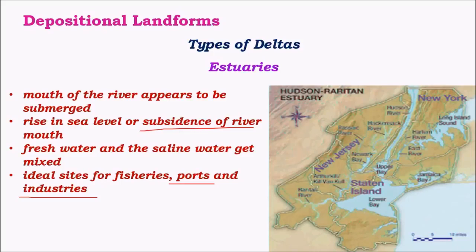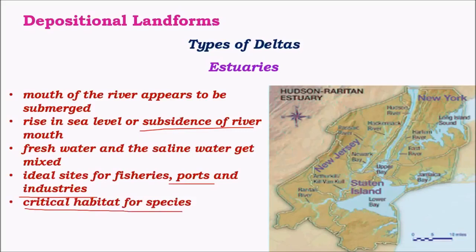When there is huge port infrastructure, industries prosper in such regions as transportation of various goods becomes easier. They also become critical habitats for species, mainly due to the presence of various marine animals which become feed for birds and other animals like crocodiles found in these estuaries.